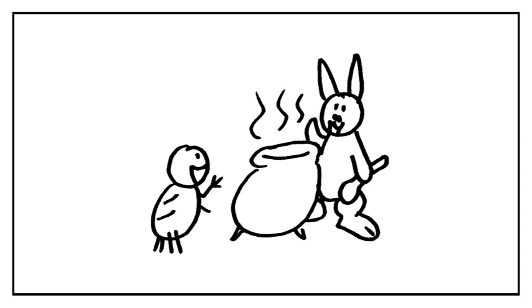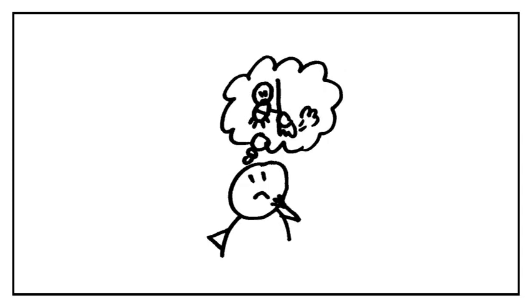Rabbit said lunch wasn't quite ready yet, but Anansi was welcome to stay. Anansi knew that if he stayed and waited for the greens to finish cooking, Rabbit would surely ask him to do chores, and Anansi certainly didn't want to do that. He made up an excuse about having work to do, but offered a suggestion.